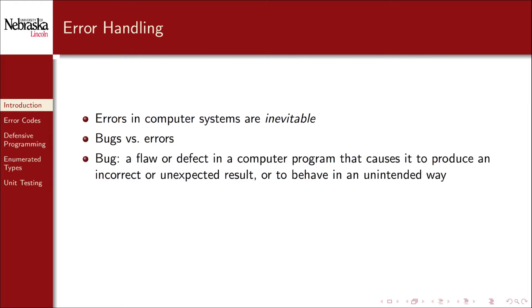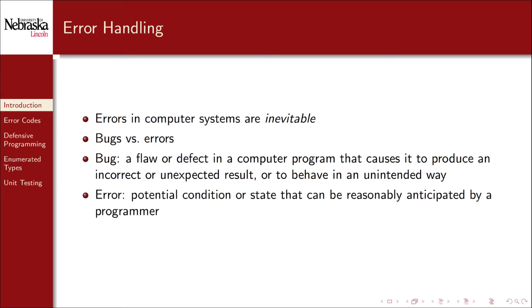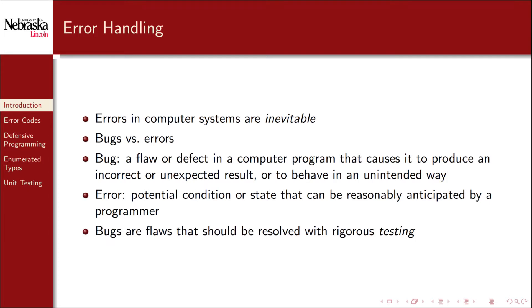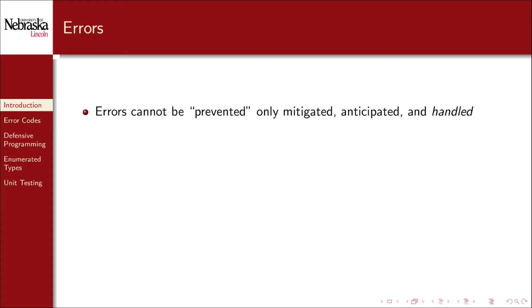A bug is a defect or flaw in a program that causes it to produce incorrect or unexpected results. An error is a potential condition or state of a program or system that can be reasonably anticipated by a programmer. Bugs are flaws that can and should be resolved with rigorous software testing — we've been doing some testing up to this point, but we'll revisit this more formally later on. Errors, however, cannot be prevented, only anticipated and mitigated by writing code to handle the error situations.